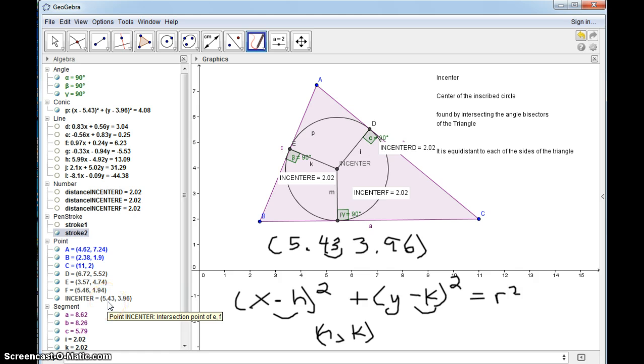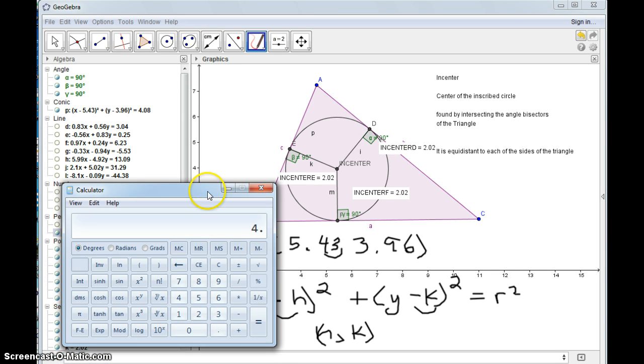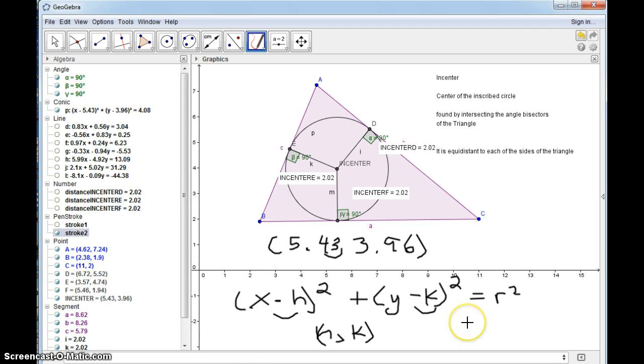This is the center, and that should come up as the incenter. So that's it right here, 5.43 comma 3.96, and that equals r². So if I took 4.08 and took the square root, that will give me the radius, which is 2.02 rounded. So I hope you enjoyed this video, and thank you for watching.